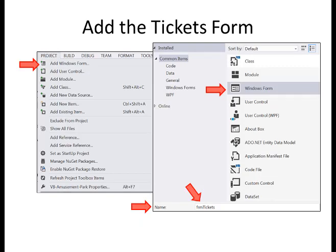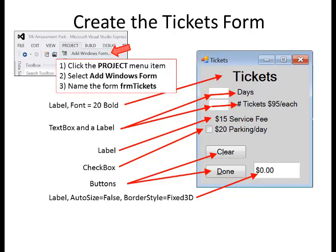Add the Tickets form. From the project menu, click Add Windows Form. Go down to where it says name and call this FRMTickets. I used a capital T for Tickets to separate the FRM from the word Tickets.